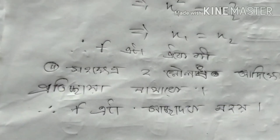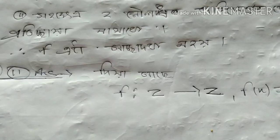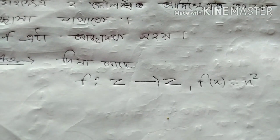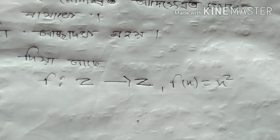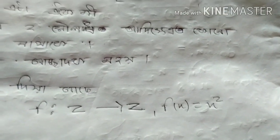I am going to do question number 2. The question is f, where z belongs to z. Question 2: f of x is equal to x squared.